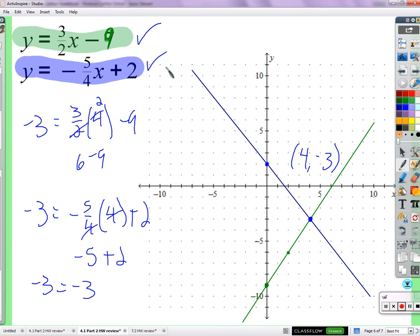So it should be 4, negative 3. Well, let's see, we should get negative 3 if we plug in a 4 for x. And so 3/2 times 2 is 3, times 2 is 6, minus 9. That's negative 3. So check. And we should get the other one, negative 3 when we plug in 4 into this equation. Negative 5/4 times 4 plus 2. That's negative 5 plus 2, and that is negative 3. So it should work there too.